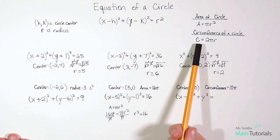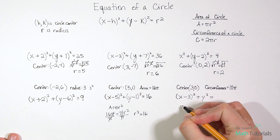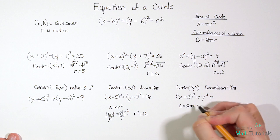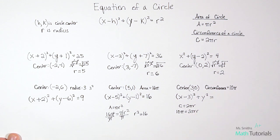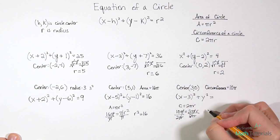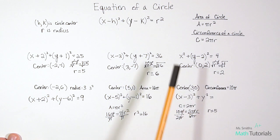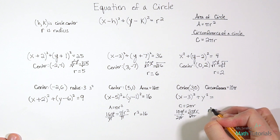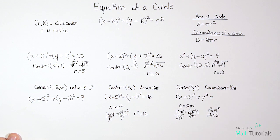Using the circumference formula C = 2πr, and knowing C = 10π, we write 10π = 2πr. Dividing both sides by 2π, the π's cancel and 10 ÷ 2 = 5, so r = 5. But we need r squared, not just r. So we square both sides: r² = 25. That goes into our equation.